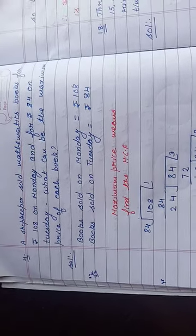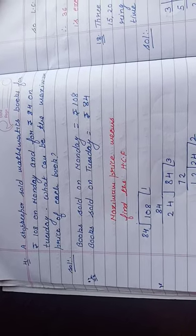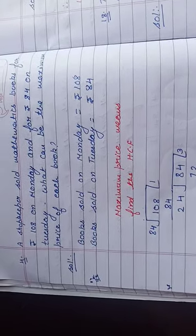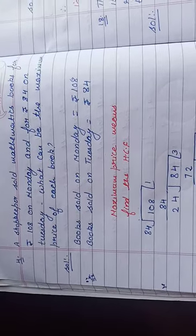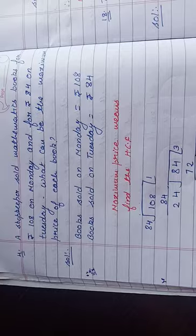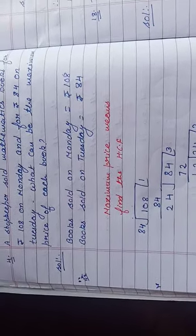Let us solve this question. Number of books sold on Monday is equal to rupees 108 and number of books sold on Tuesday is equal to rupees 84. Now we have to find the maximum price of each book. For finding the maximum value, we will find the HCF of these two numbers.